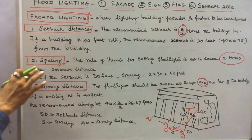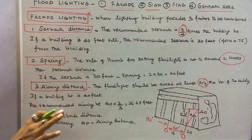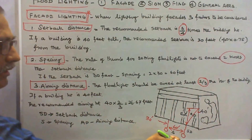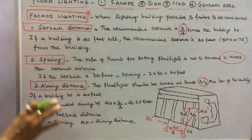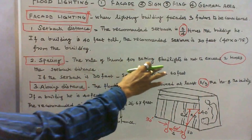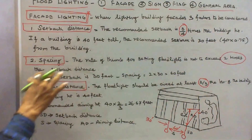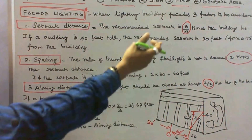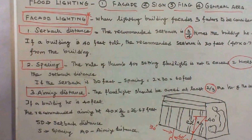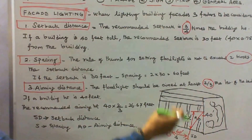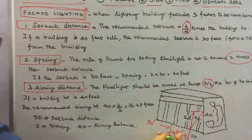The second term is spacing. The distance between two projectors is called spacing. The rule of thumb for facade lighting is not to exceed 2 times the setback distance. In this case the setback distance is 30, therefore the distance between the two projectors is 2 times 30, equal to 60 feet.